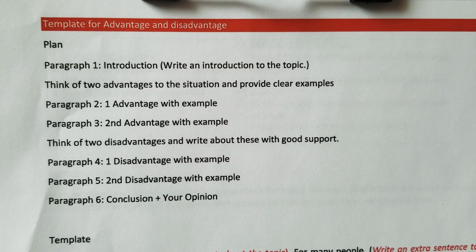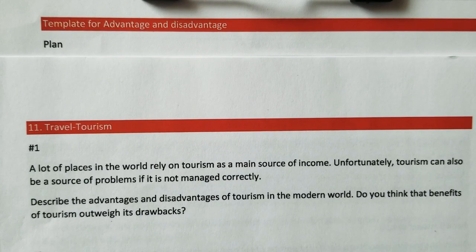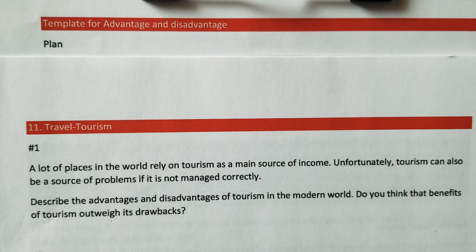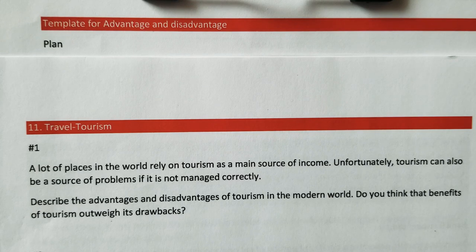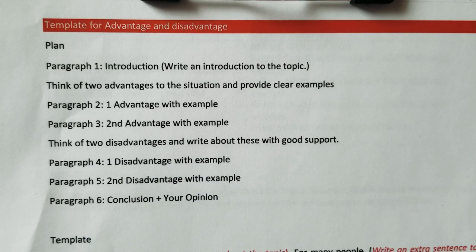On the screen you can see the paragraphs you are going to cover in the advantages and disadvantages essay. But before that, let's have a look at a sample question from the IELTS exam. The question says: 'A lot of places in the world rely on tourism as a main source of income. Unfortunately, tourism can also be a source of problems if it is not managed correctly. Describe the advantages and disadvantages of tourism in the modern world. Do you think that the benefits of tourism may outweigh its drawbacks?' Here we need to talk about whether tourism brings positive things or it is a negative trend.